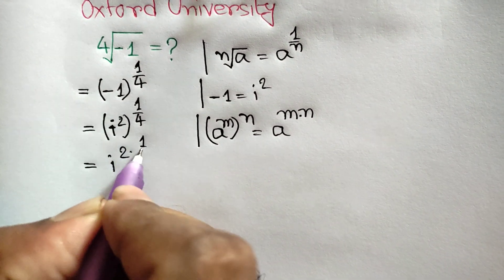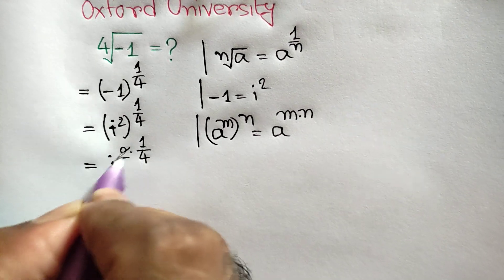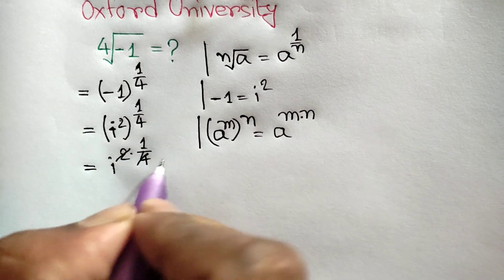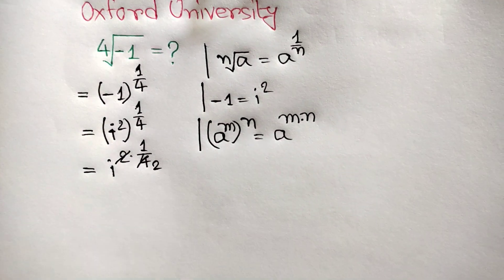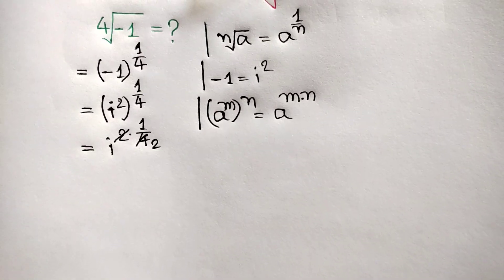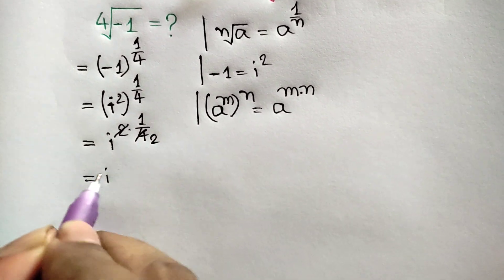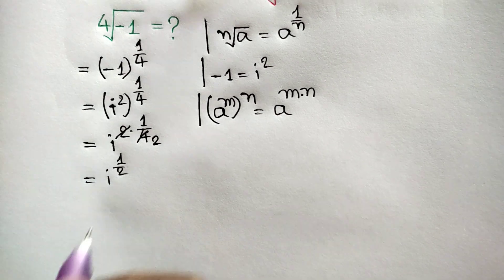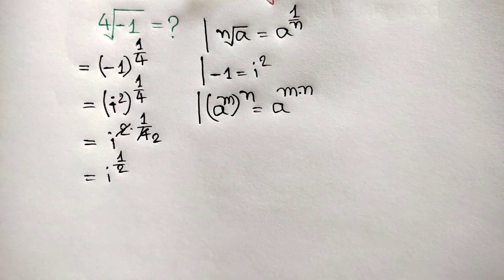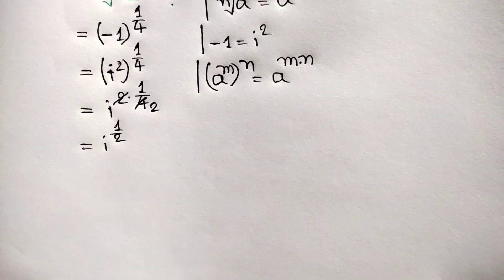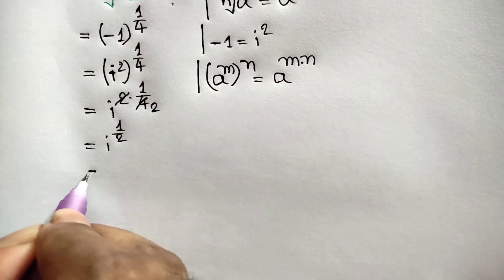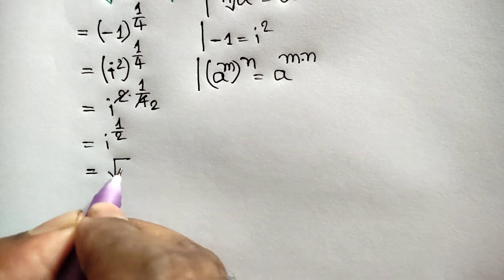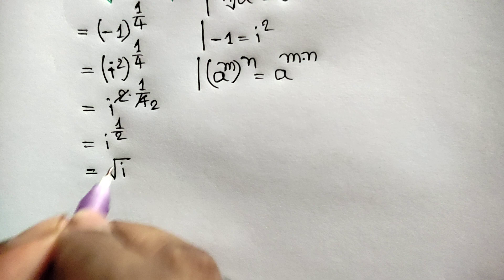Two times one over four gives us one half, so we can write i to the power one over two, which is equal to the square root of i.